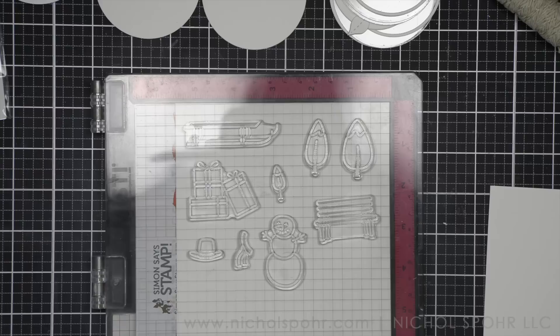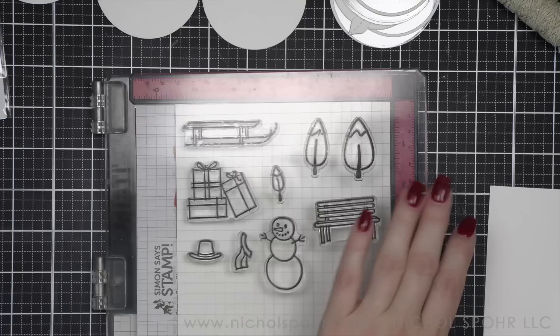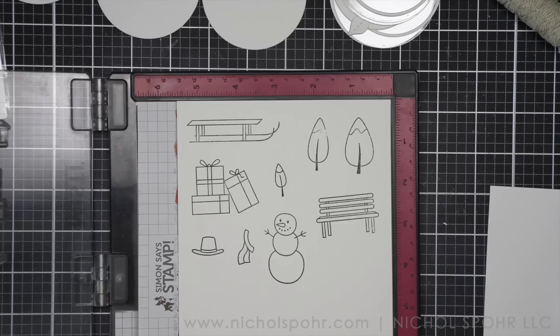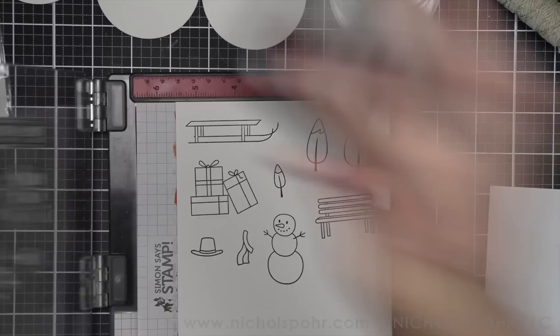I have die cut all the components I need. I have die cut them from smooth white cardstock and acetate. You can see them there up above. I'll talk a little bit more about those as I stamp the backers for my tags.